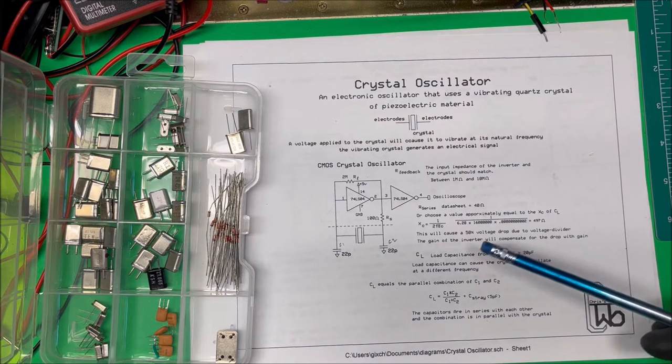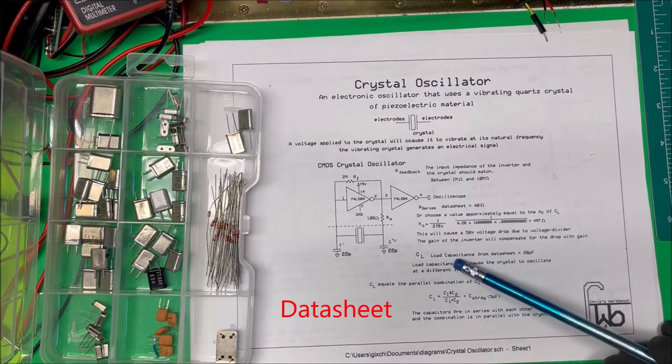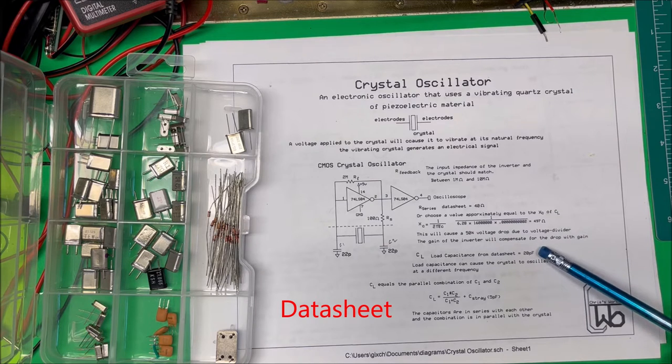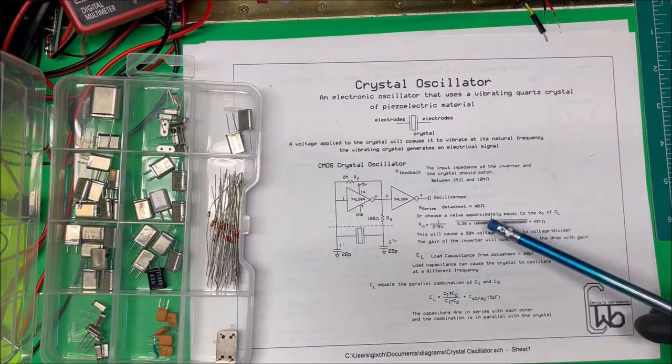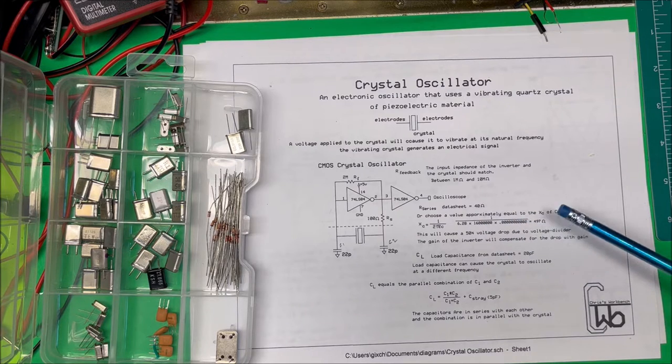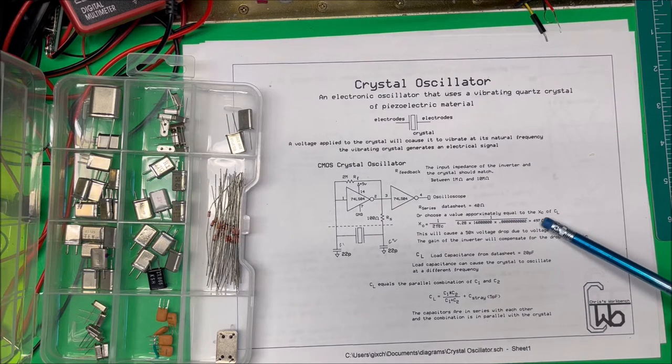The load capacitance is also in the datasheet, and in this case the load capacitance is equal to 20 picofarads. So if we take 2π times the frequency times the capacitance, it comes out to about 500 ohms.